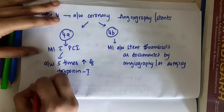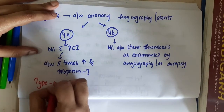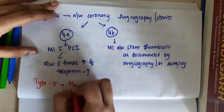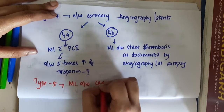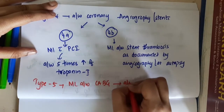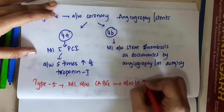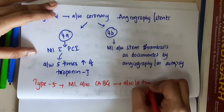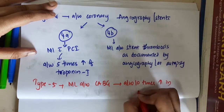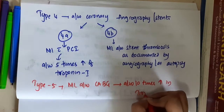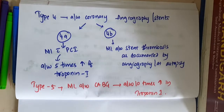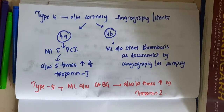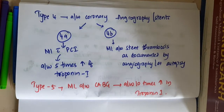Then we have Type 5. Type 5 is mainly MI associated with coronary artery bypass grafting, associated with 10 times increase in troponin I levels. So these are the five definitions of MI.